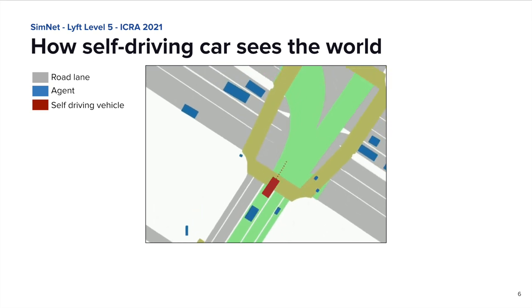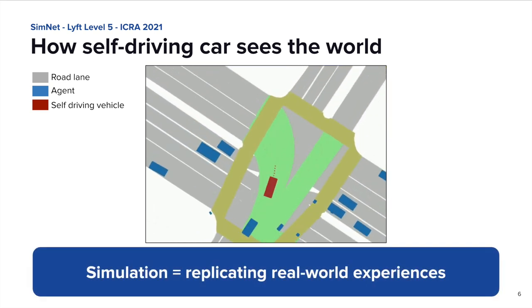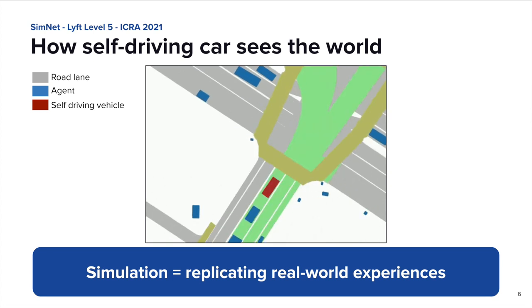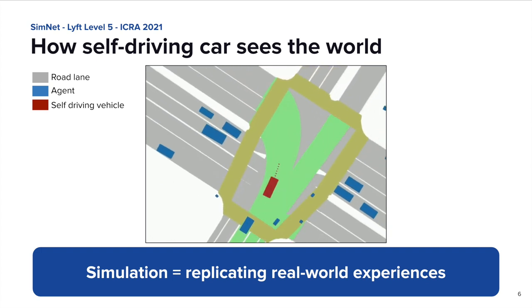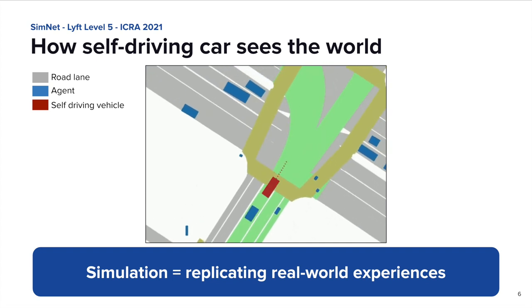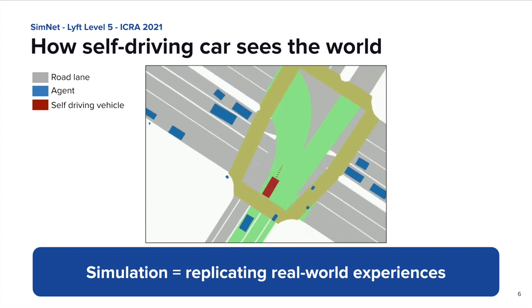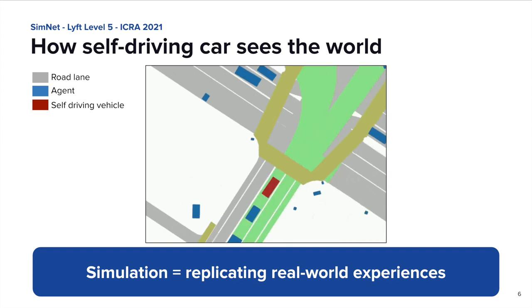The SDV can see the reaction of other agents to its own behavior. In this setting, the task of simulation can be framed as replicating what the SDV would experience in the real world and checking whether its decisions are correct. In practice, this requires simulating all other agents of interest. Next, I'll tell you about the different ways we can perform this simulation.